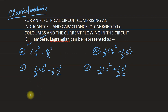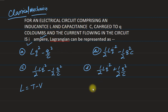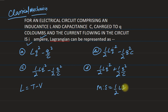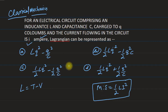The Lagrangian can be represented as L = T minus V, where T stands for the kinetic energy of the system and V stands for the potential energy of the system. In the case of an LC circuit, the energy stored in the form of magnetic energy is equal to half LI squared. This is the magnetic energy stored inside the inductor.